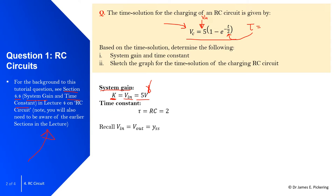The time constant, if you remember, is equal to R multiplied by C — the resistor value multiplied by the capacitor value. In this case a value of two has been given. What's happening is as the potential difference is applied, the capacitor charges up until the voltage out of the capacitor equals the voltage in. Your system gain tells you the final value of the system when the RC circuit is in steady state.